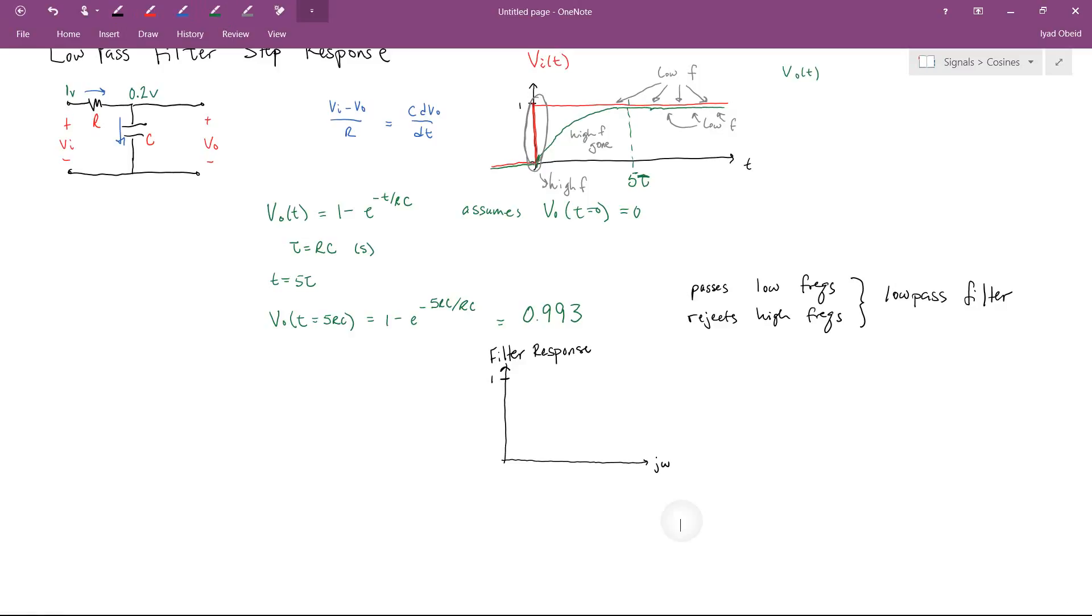And essentially what this is is the gain of the filter. So what we're going to assume is that at low frequencies, the system passes all the frequencies. So a gain of one means that the output equals the input. And then at high frequencies, the gain starts to tail off and you head towards a gain of zero. So this is your sort of standard low pass filter response, at least in cartoon format.